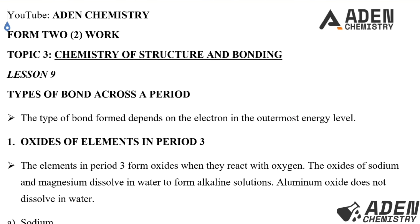Hello students, welcome. Previously in lesson 8, Form 2 Topic 3, we were dealing with metallic bonds. Today in lesson 9 we want to proceed to the types of bonds across a period. We are seeing that the type of bond formed depends on the electrons in the atom's energy level. In this lesson we'll be mainly dealing with the oxides of elements in Period 3 in terms of structure and bonding.